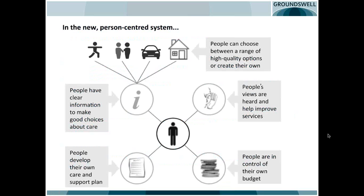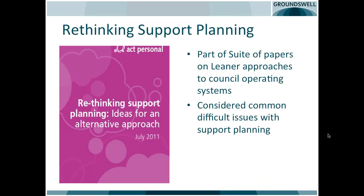With apologies to our international colleagues for this UK-centric flavour to start, this is a snapshot from the care and support white paper that emphasises the person-centred nature of the transformation we're aiming for in the UK, and the integral role that people developing their own care and support plan has in that transformation, which this diagram clearly emphasises.